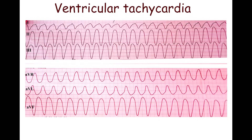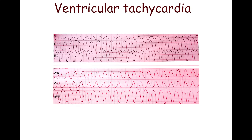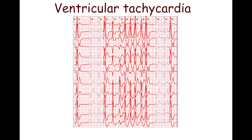Ventricular tachycardia may be monomorphic or polymorphic. This is monomorphic ventricular tachycardia at a rate of 233 BPM in a patient with myocardial infarction. Polymorphic ventricular tachycardia is characterized by variation in the QRS complex morphology, meaning that ventricular beats originate from multiple ventricular foci.